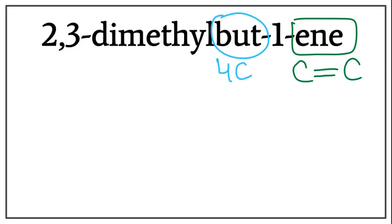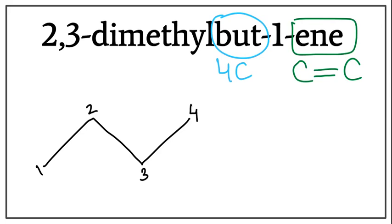Let's draw the four-carbon chain. A trick to draw this is that you always count till one less than the number of carbons you want to draw: one, two, three. Let's number them: one, two, three, and four. This 1 between the bute and ene tells us the location of the double bond, meaning the double bond is between the first and the second carbon.